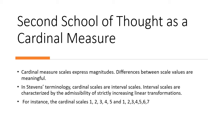So we can use parametric assumptions. For instance, the cardinal scales may be like 1, 2, 3, 4, 5 or 1, 2, 3, 4, 5, 6, 7 or 1, 2, 10. Whatever the case, we can use it as a scale.